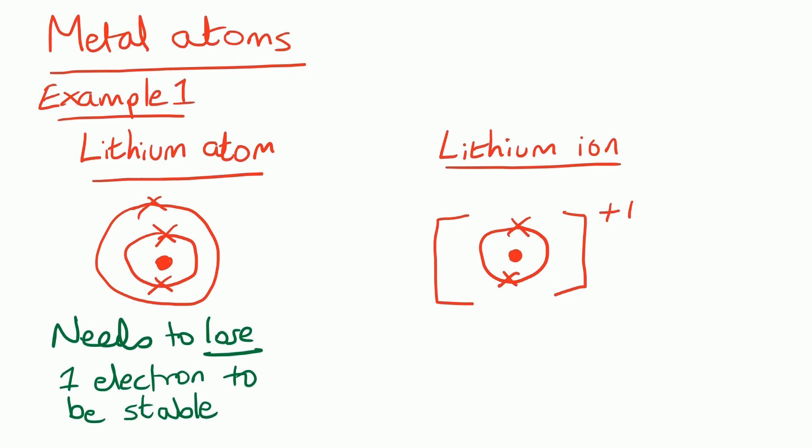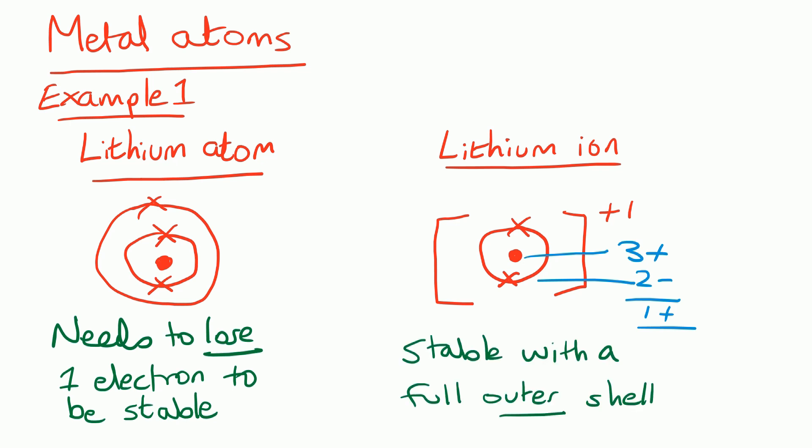Because it's an ion we draw brackets around it, and it carries a 1+ charge. From our annotated periodic table, Group 1 elements make 1+ ions. In lithium's case, it still has three positive protons in the nucleus but now only two negative electrons, so three plus and two minus gives an overall 1+ charge. The lithium ion is now stable with a full outer shell.